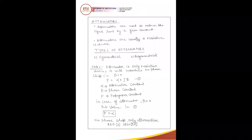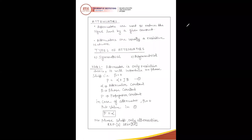Now we discuss about attenuators. Attenuators are used to reduce the signal level by a given amount. We have amplifiers which increase the voltage level — attenuators work opposite to amplifiers. Attenuation means loss, reducing the voltage level. Attenuators are used to reduce the signal level by a given amount in terms of voltage or magnitude.